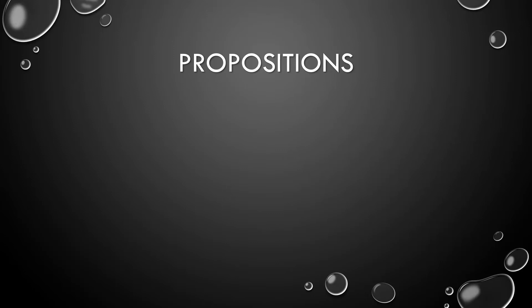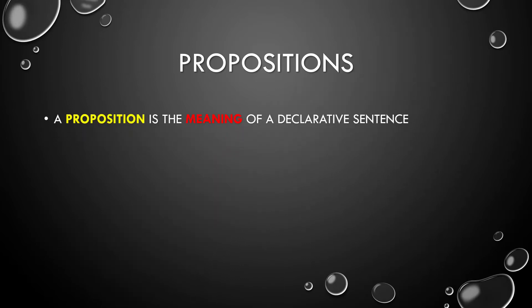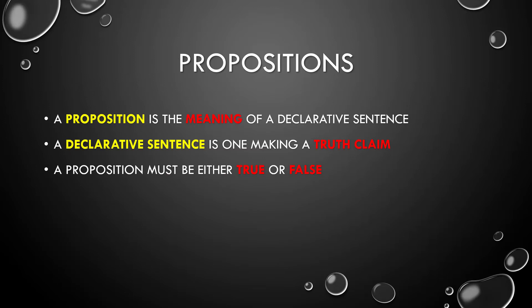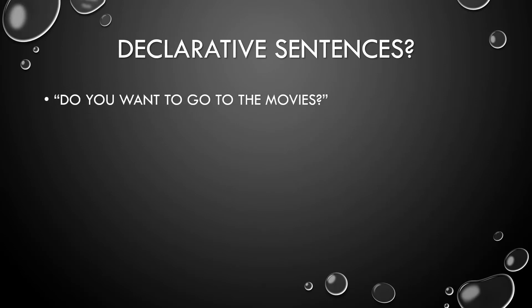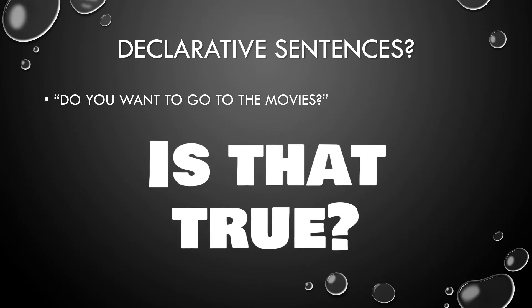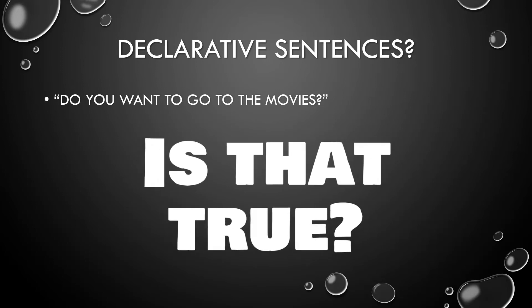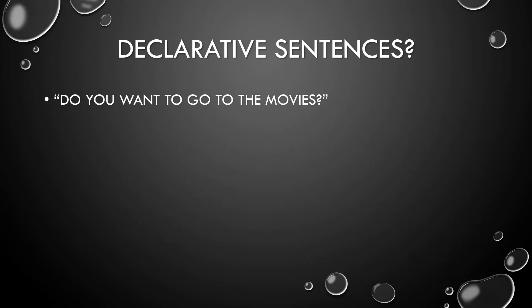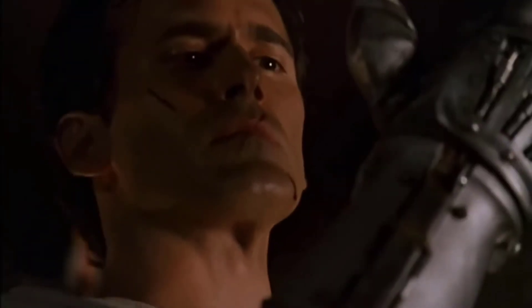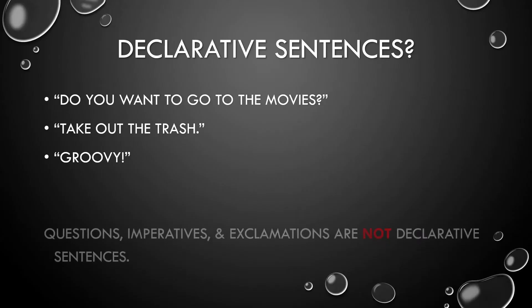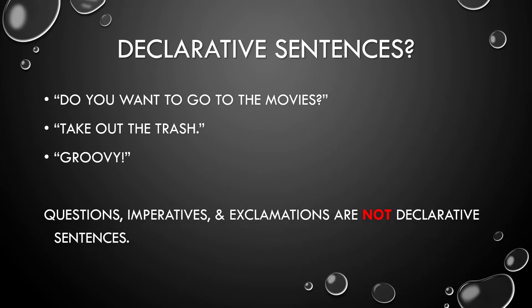This brings us back to propositions — also called claims or statements. I prefer 'propositions' since people generally don't use the word very often outside of philosophy and therefore don't misuse it as often. A proposition is the meaning of a declarative sentence, and a declarative sentence is one which makes a truth claim. Therefore, a proposition must be either true or false. Consider: 'Do you want to go to the movies?' — a simple test is to ask if that's true. Since that seems very strange to ask, there's a category mistake — it's not a declarative sentence. 'Take out the trash' — same test, same answer: not declarative. 'Groovy' — not even a sentence. Questions, imperatives, and exclamations are not declarative sentences.